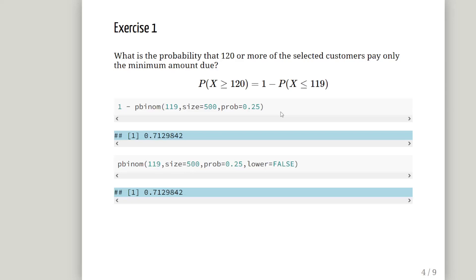First question: what is the probability that 120 or more of the selected customers pay only the minimum amount due? That is the probability of X greater than or equal to 120. Now you have to recall that the binomial distribution is a discrete distribution, so what we can do is look at what the complement is and calculate that. The complement is the probability of X less than or equal to 119. This is what we're going to calculate: 1 minus the probability of X less than or equal to 119.